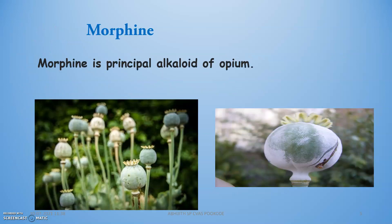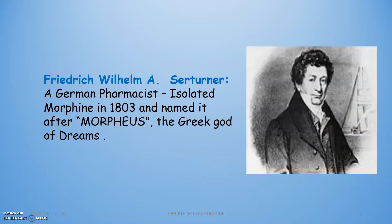This is the Papaver somniferum — the poppy plant. Friedrich Wilhelm Sertürner isolated morphine in 1803 and named it after Morpheus, the Greek god of dreams.